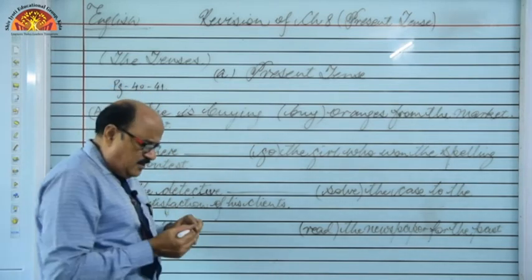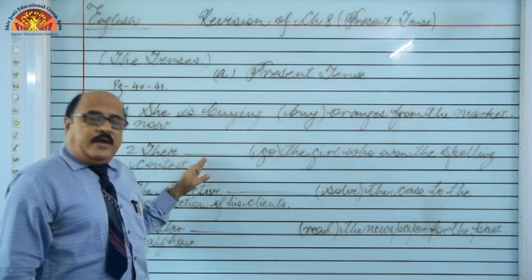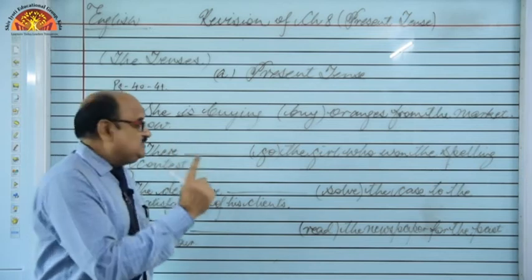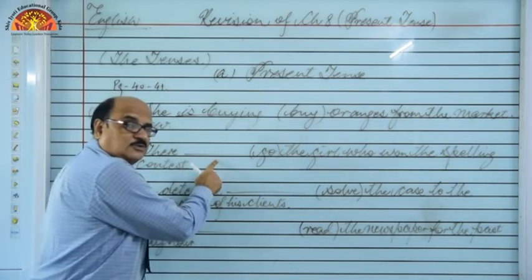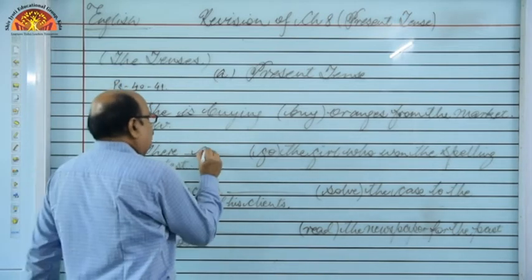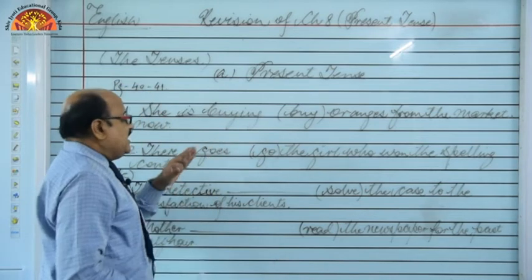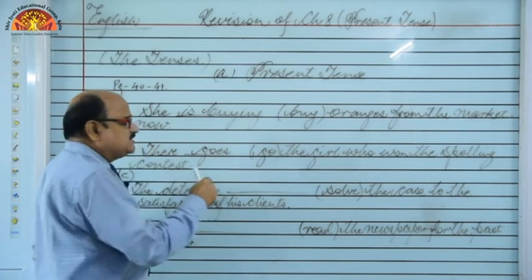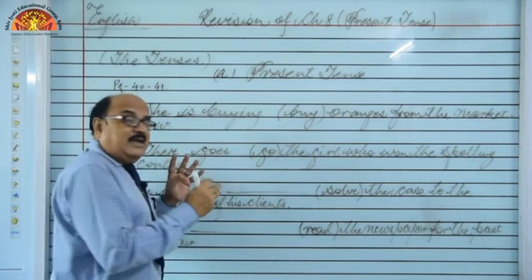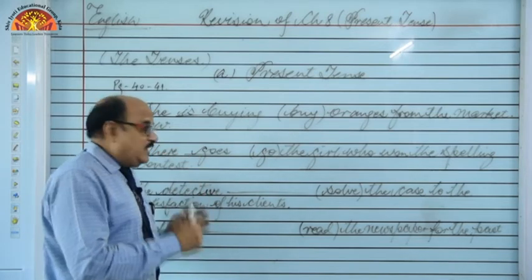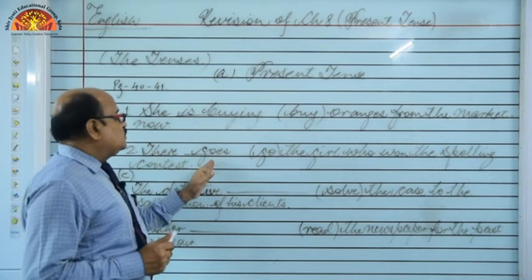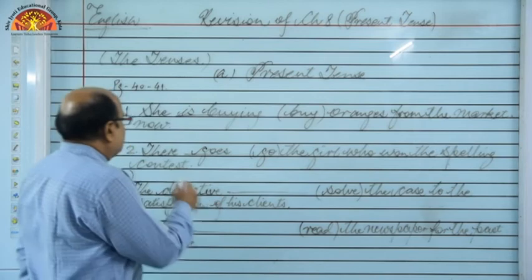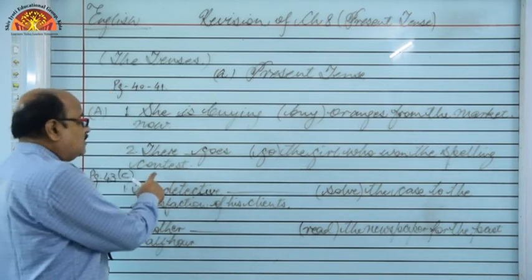Mind it — the platinum rule of English grammar is: whenever we begin any sentence with 'here' or 'there', if they are followed by a blank space, always present indefinite tense is used. Since 'there' is given and a blank space is also there, we use present indefinite tense. In affirmative sentences — I go, we go, you go, they go — but for singular third person we add S or ES. So since 'there' is treated as singular, the answer becomes: 'There goes the girl who won the spelling contest.'